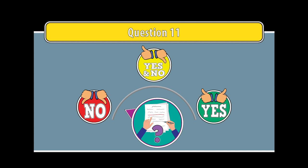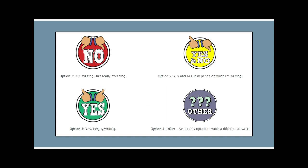Select the response that best describes how comfortable you feel about writing from the following list. Option 1: No, writing isn't really my thing. Option 2: Yes and no, it depends on what I'm writing. Option 3: Yes, I enjoy writing.